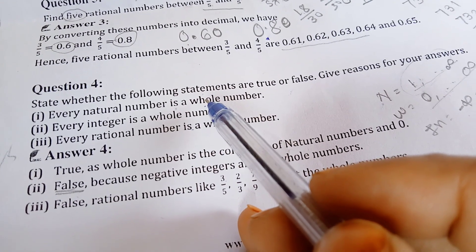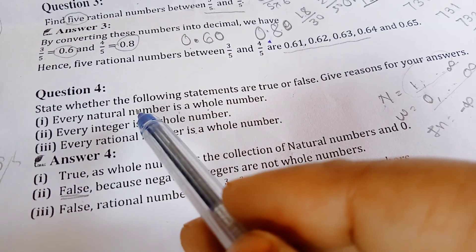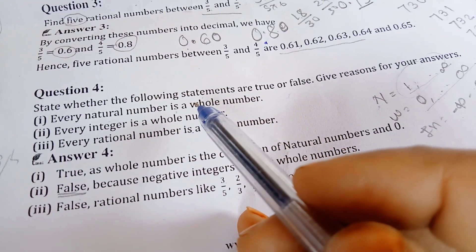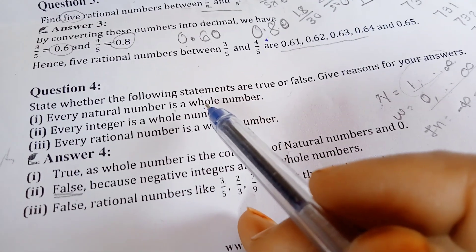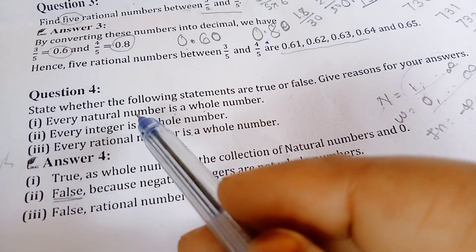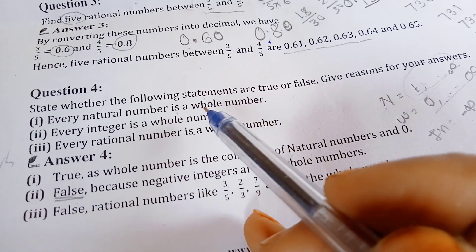If you remember, I told the definition of natural number is 1 to infinite, and the definition of whole number is 0 to infinite. That is, all natural numbers are whole numbers. So we will write True. True, because whole number is the collection of natural numbers and 0.